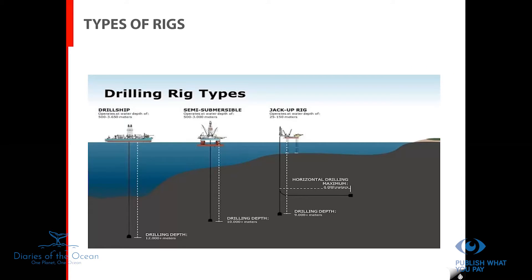There are different drilling rig types selected for different conditions — specific rigs for shallow water, others for deep water, and different rigs for different locations such as the Mediterranean versus the Arctic. In Lebanon, a drillship was used to drill Block 4 because the water depth was 1,500 meters below sea level — making the drillship the only viable option.